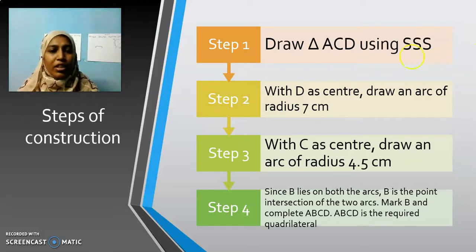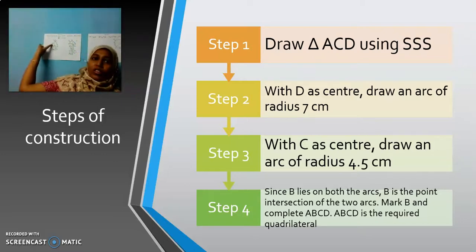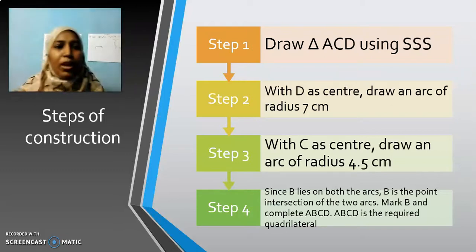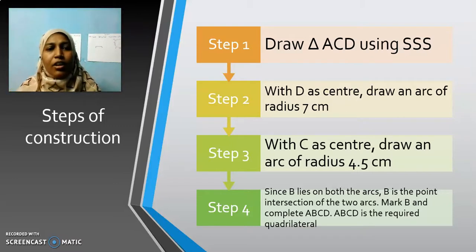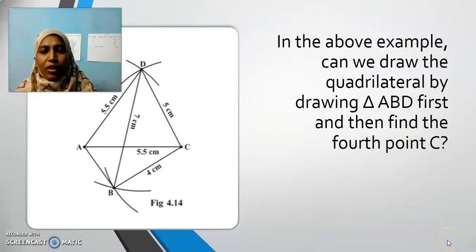Here we have constructed a triangle where we know all the three measurements. Here we first drew this triangle. We have had all the three sides measurement. That is why we say it to be SSS criterion. With D as center, draw arc of radius 7 cm. Then with C as center, draw arc of radius 4.5 cm. Since B lies on both the arcs, B is the point of intersection of two arcs. Mark B and complete ABCD.